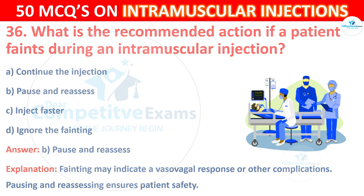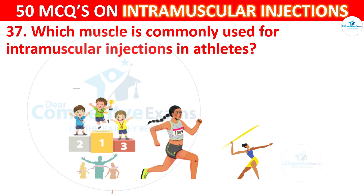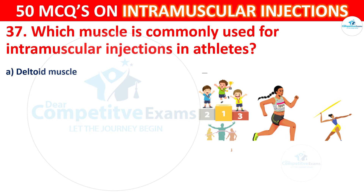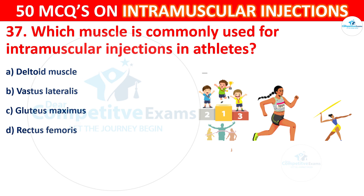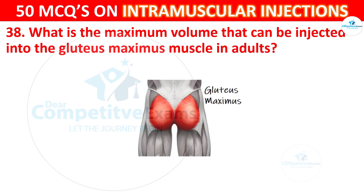Question 37: Which muscle is commonly used for intramuscular injection in athletes? Options are: deltoid muscle, vastus lateralis, gluteus maximus, or rectus femoris. The correct answer is C, gluteus maximus. Athletes often have a well-developed gluteus maximus muscle, making it a suitable site for intramuscular injections.